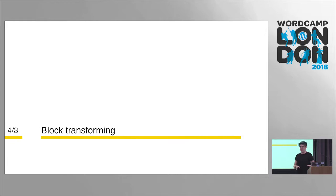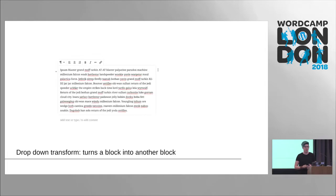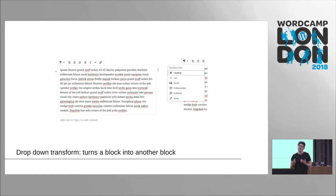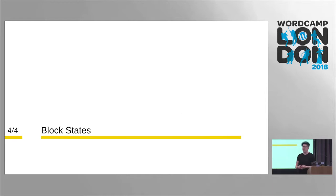Almost all blocks can be transformed into another type of block, allowing you to easily change content. You do this by clicking the dropdown in the toolbar, which shows the different blocks, or through the ellipsis menu — the ellipsis is your constant point throughout. Here you get a list of everything a block will transform into. Each block is different; for example, here you can change a paragraph to a list, a quote, or even a heading.